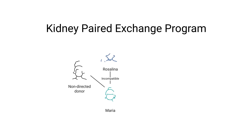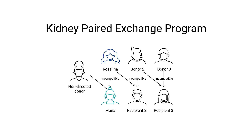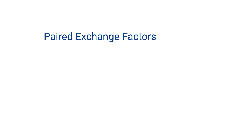Most swaps involve multiple donors and recipients as shown here. Overall, the goal of the paired exchange is to find better matches for all recipients involved, including you. In addition to blood type and HLA, a paired exchange can also look at age, distance, and timing of donation when checking compatibility. Do not limit yourself only to compatible donors, as the paired exchange is available for any incompatible candidates too.